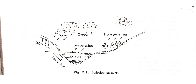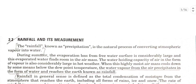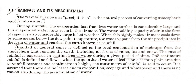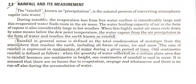This diagram explains the hydrological cycle. Next topic is rainfall. Rainfall, also known as precipitation, is the natural process of converting atmospheric vapors into water. During summer, the evaporation loss from free water surfaces is considerably large and this evaporated water finds room in the air mass.